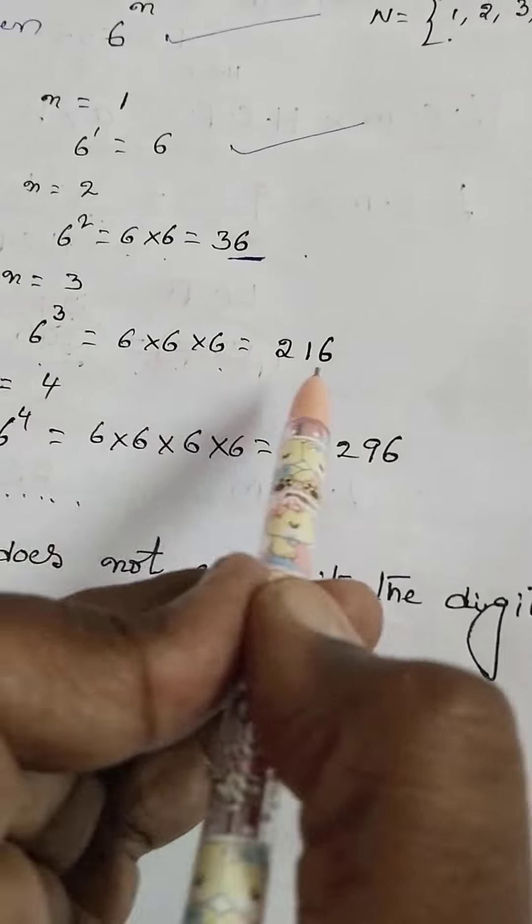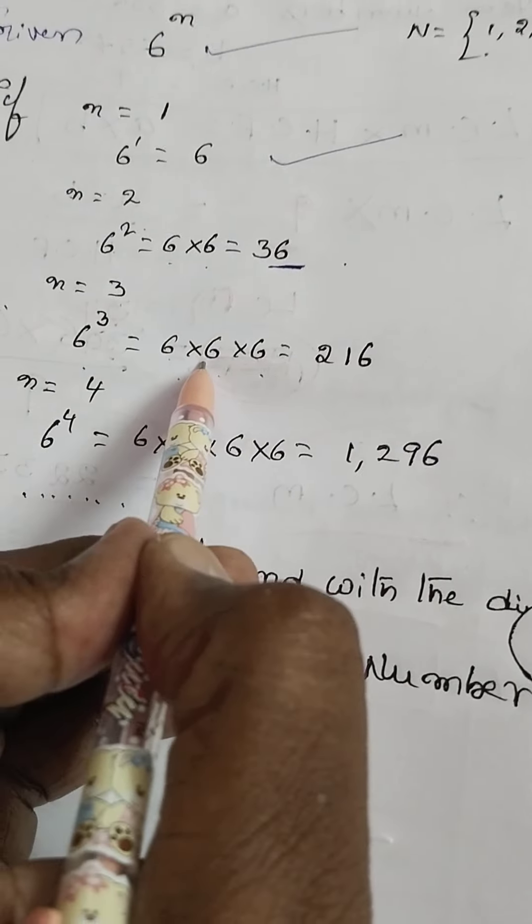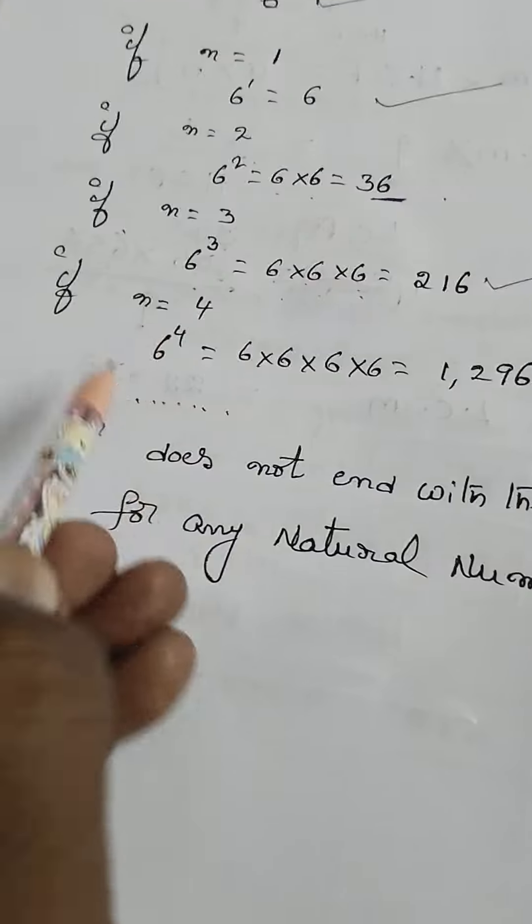If n equals 3, 6 cube, 6 into 6 into 6 equals 216. Again,